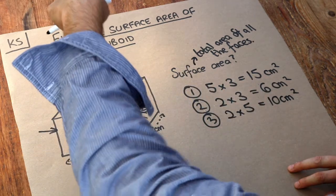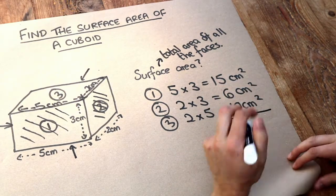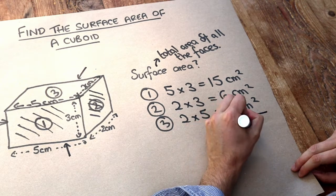And the rectangle at the top is going to be the same as the rectangle at the bottom. So if we were to just add this area so far to find the total area so far, that comes to 31 centimetres squared.